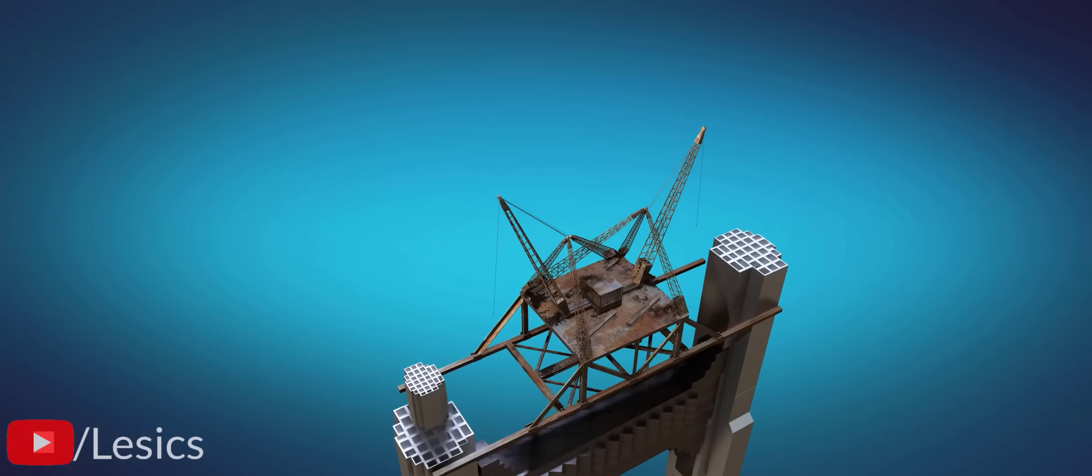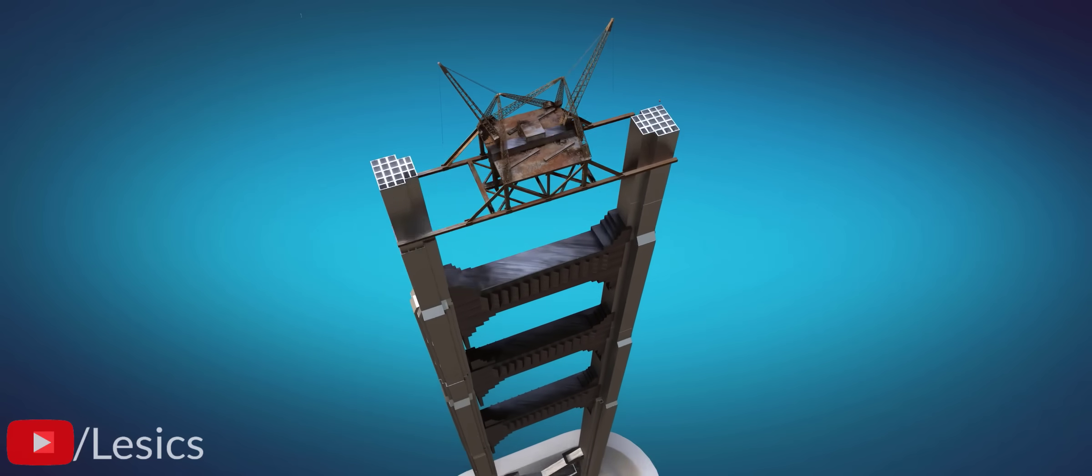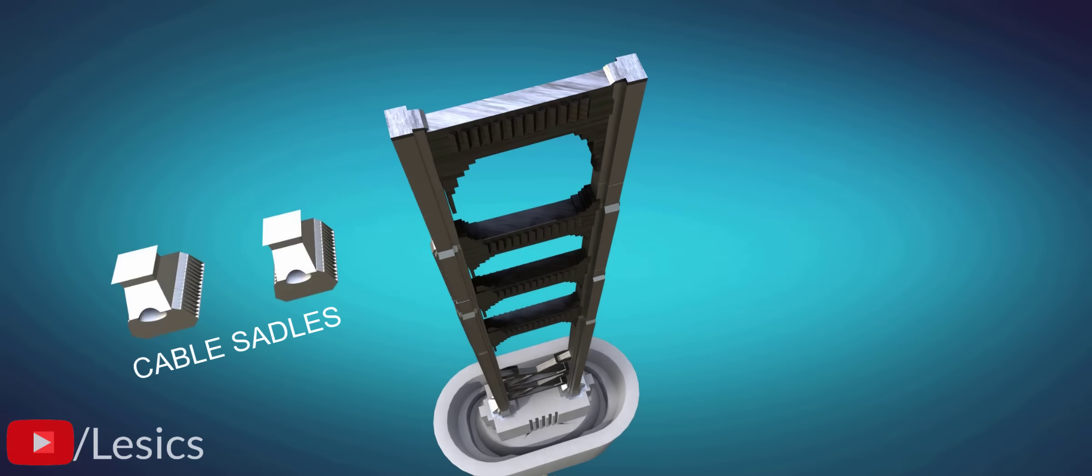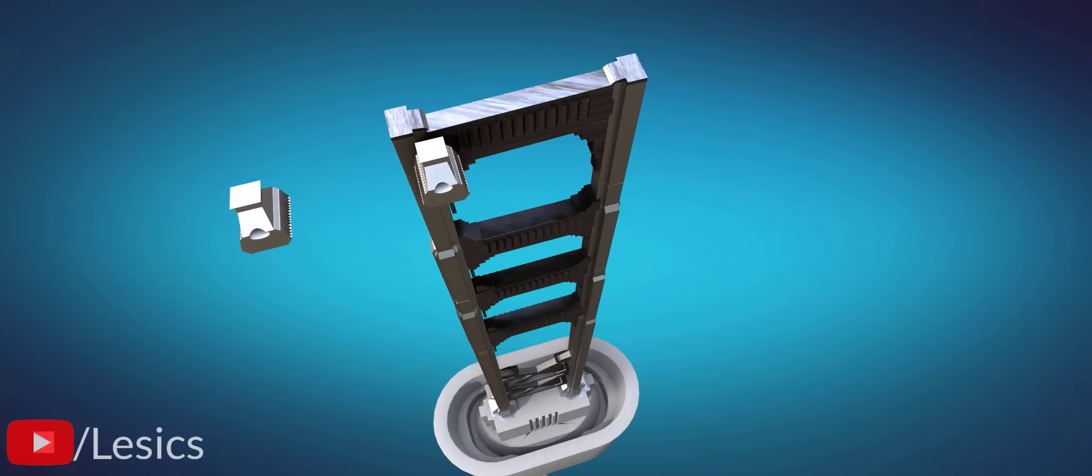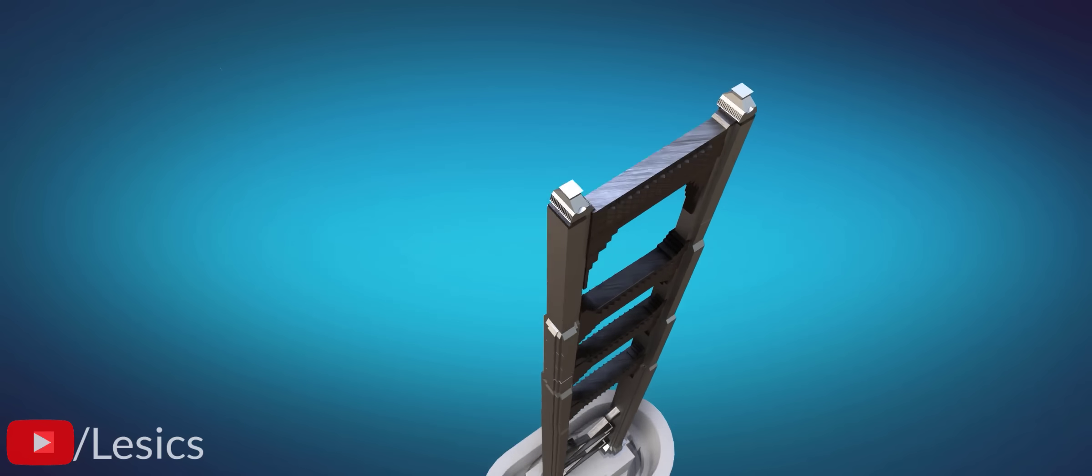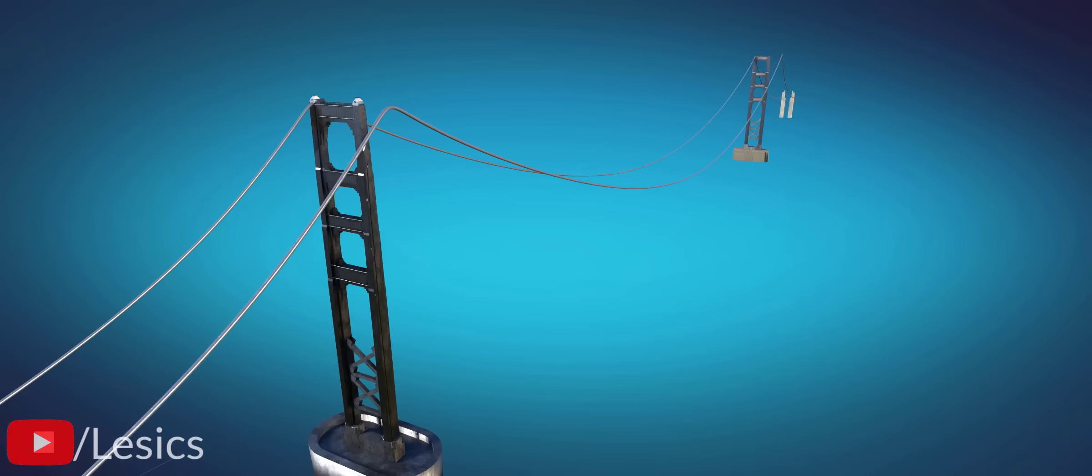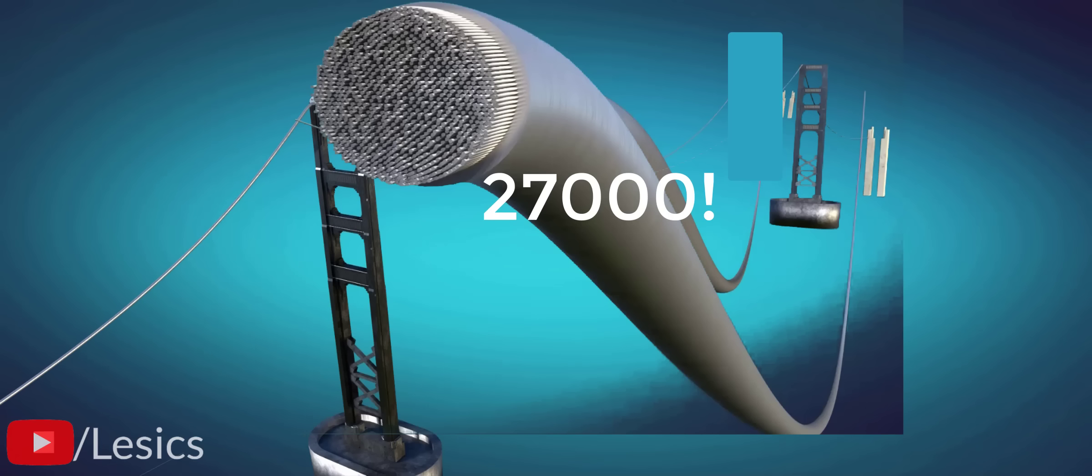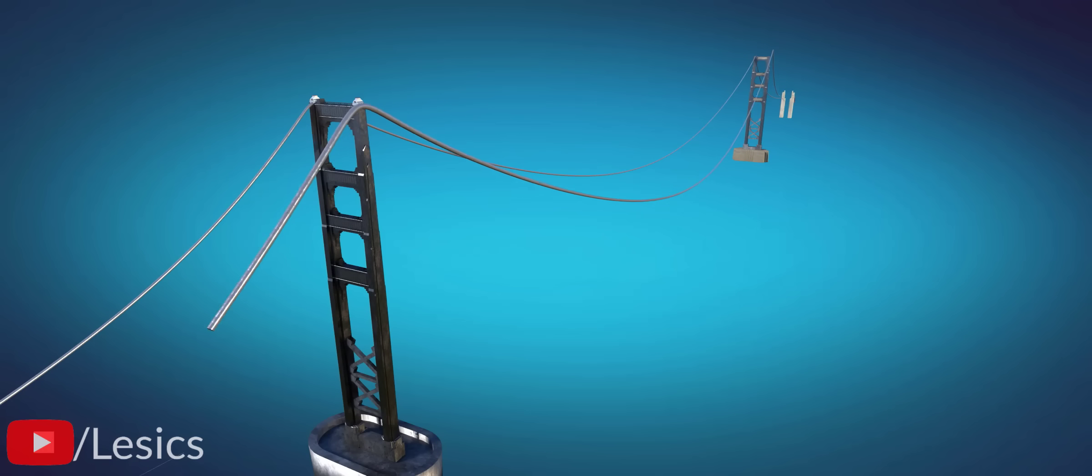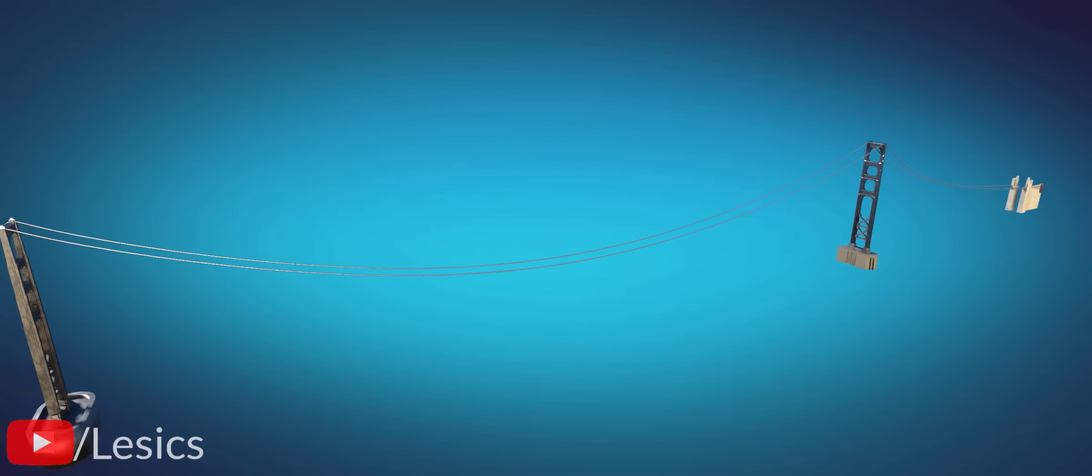The tower construction was then complete. Next, it was time to lay down the main cables. For this, they first installed cable saddles atop the towers. You may think that the main cable is a single solid cable. The main cable is in fact made up of 27,000 smaller wires. And a total length of 129,000 kilometers of steel wire was consumed for fabrication of it.